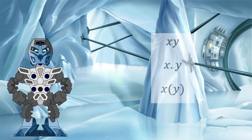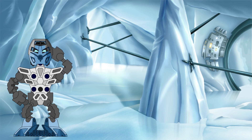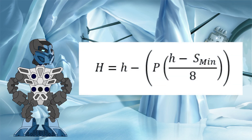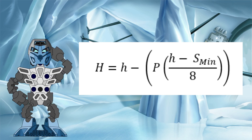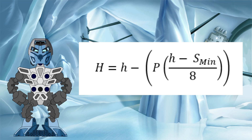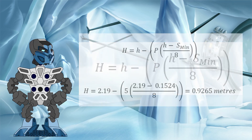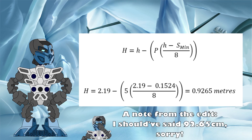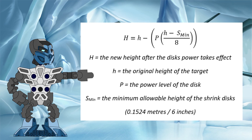Now, let's add in a couple more factors to the equation so that we can use it to gain our final height value. We will represent the new height after the effects of the disc with an uppercase H. In order to get our value for this, all we need to do is take our original height, again represented by lowercase h, and minus from it what we have built so far. Going back to our Toa example, that means that our new height after being hit by a level 5 shrink disc equals 0.9265 meters, or 91.65 centimeters. And there we have it — the full equation for the shrink discs.